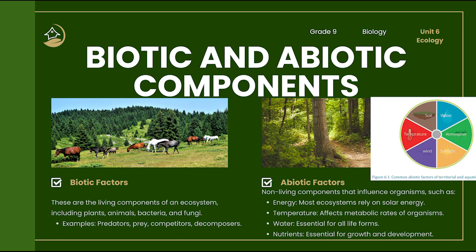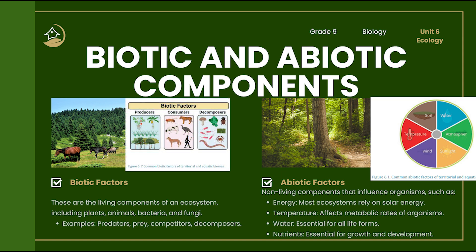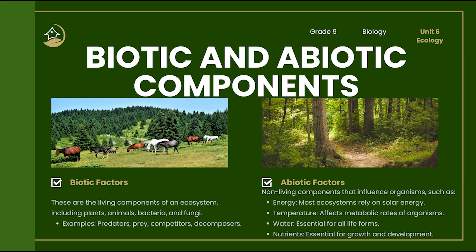Sunlight is the primary energy source — most ecosystems rely on the sun. Temperature affects how fast organisms grow or metabolize food. Water is essential — all life needs it. Nutrients such as nitrogen and phosphorus are vital for growth. Both biotic and abiotic components work together to shape the environment and determine which organisms can survive there.